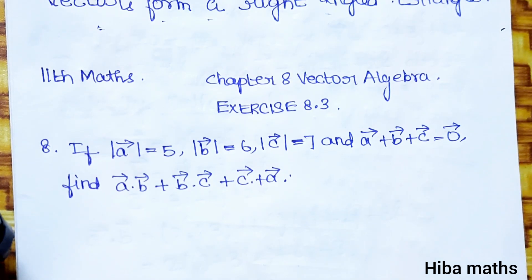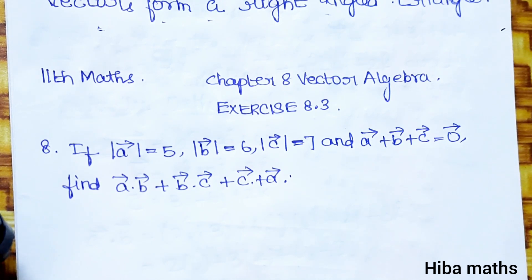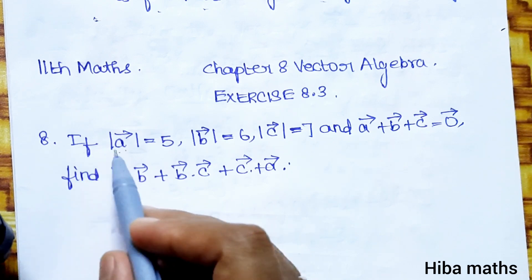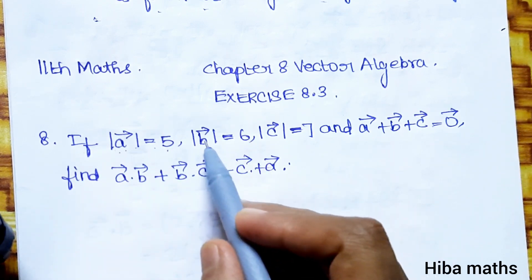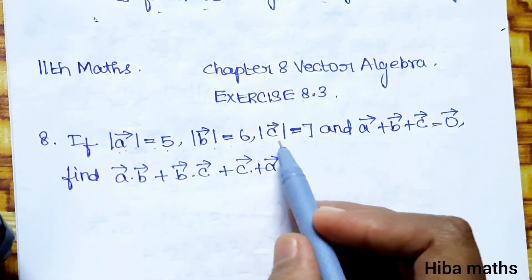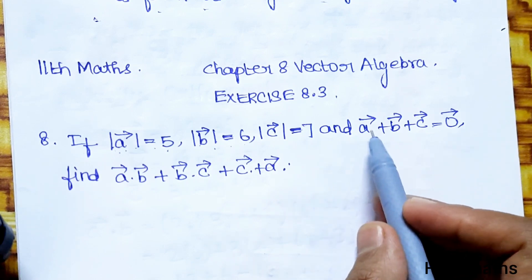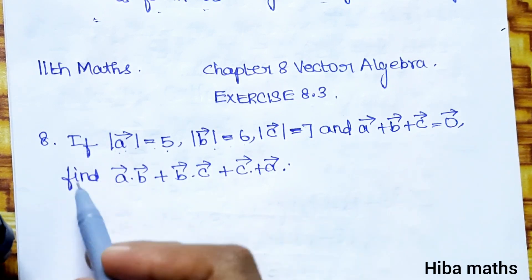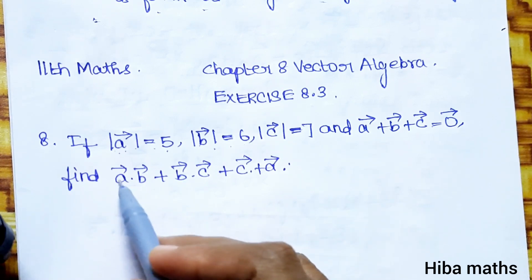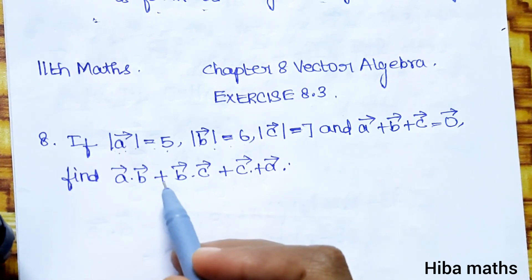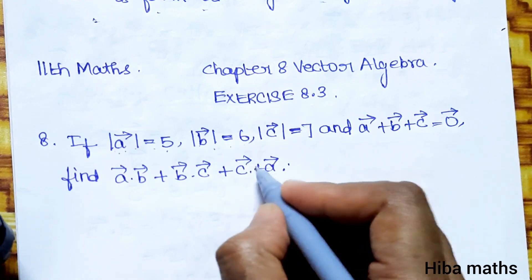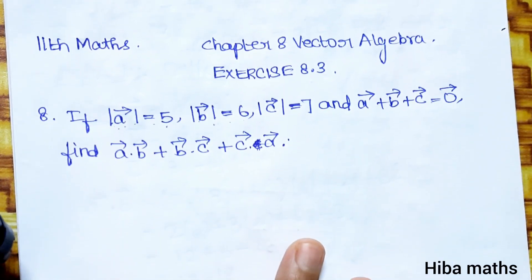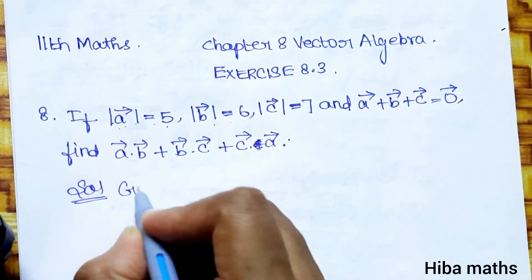Hello students, welcome to the Class 11 chapter 8 Vector Algebra, Exercise 8.3. Let's look at the question: if the modulus of a vector is equal to 5, modulus of b vector is equal to 6, modulus of c vector is equal to 7, and a vector plus b vector plus c vector is equal to zero vector, find a dot b vector plus b dot c vector plus c dot a vector.